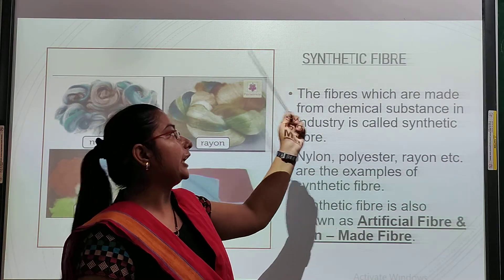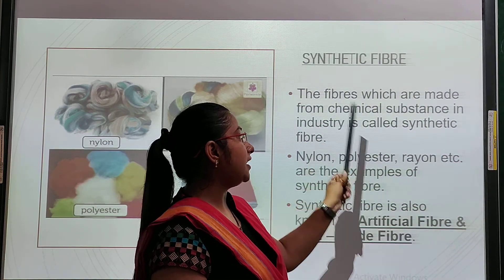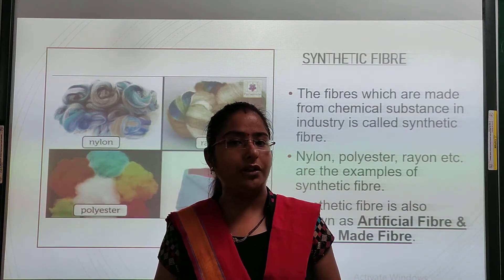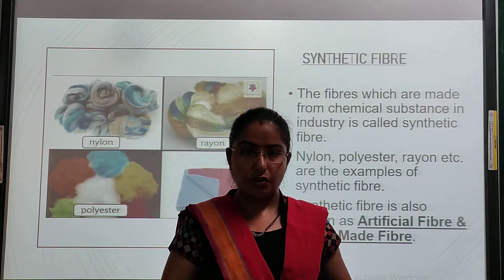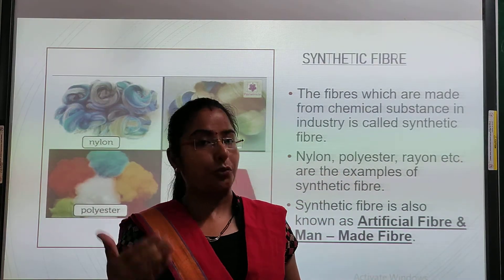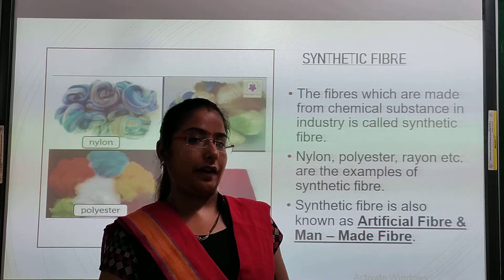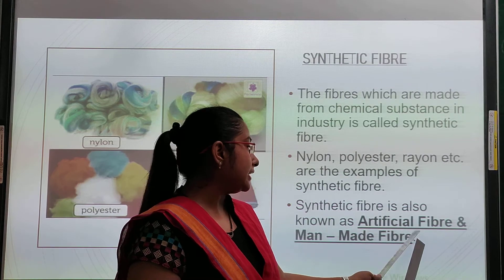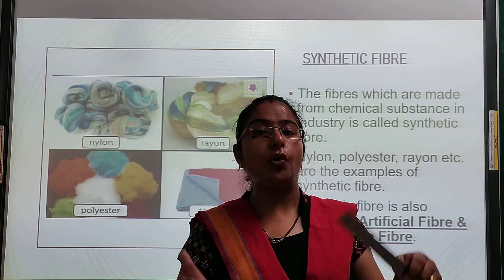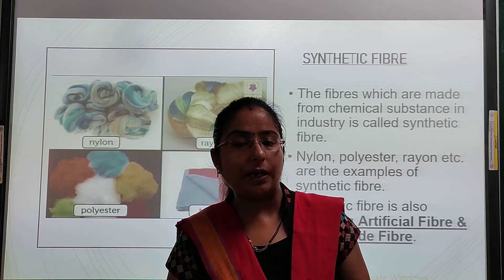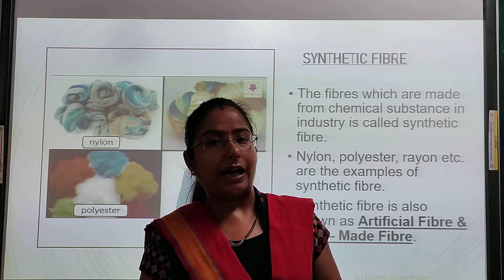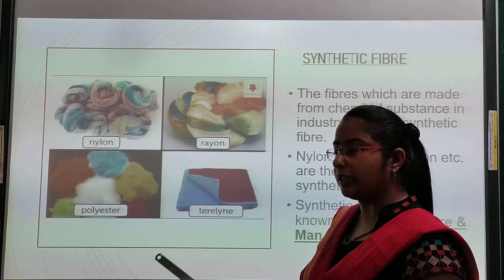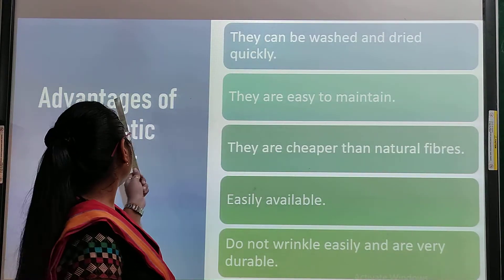Now, synthetic fibers. As I told you, there are two types of fibers: natural fibers and synthetic fibers. The fibers which are made from chemical substances in industry are called synthetic fibers. Natural materials like cotton and wool are sent into industries and reacted with chemical substances to create more shiny and better quality materials. Nylon, polyester, and acrylic are examples of synthetic fibers. Synthetic fibers are also known as artificial fibers or man-made fibers.